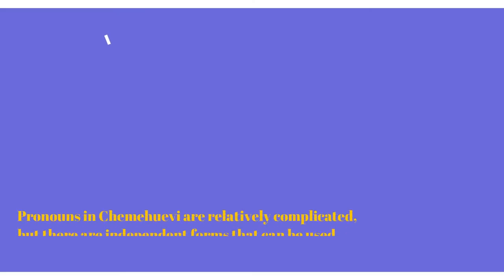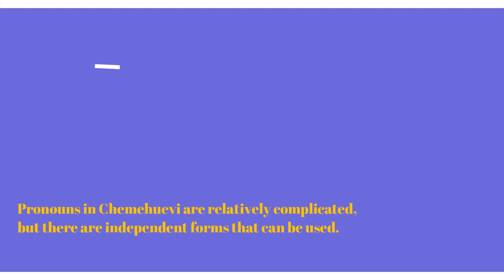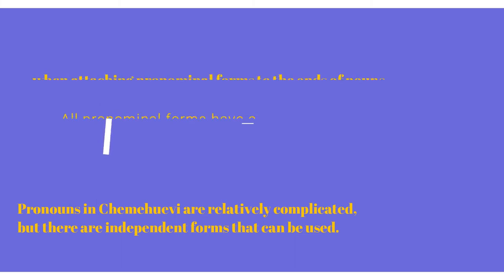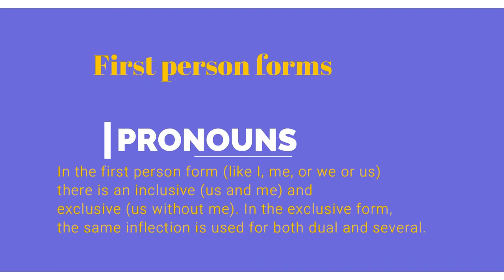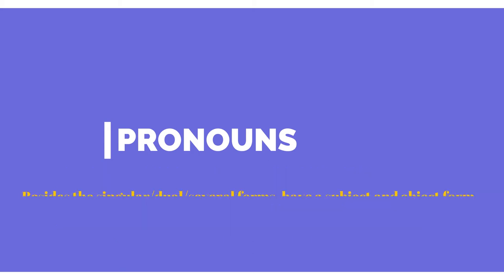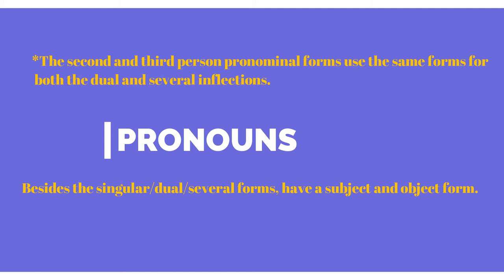Pronouns in Chemehuevi are relatively complicated, but there are independent forms that can be used. All pronominal forms have a singular, dual, and a form that attaches to several nouns. In the first person form, like I, me, or we, there is an inclusive meaning us and me, and exclusive meaning us without me. Me refers to the person speaking at the moment. In the exclusive form, the same inflection is used for both dual and several.